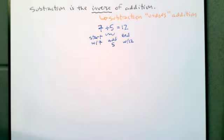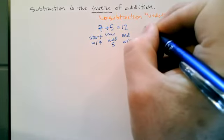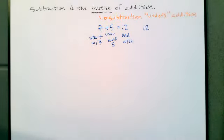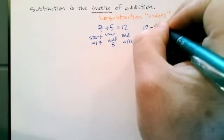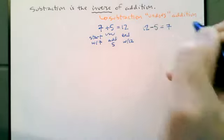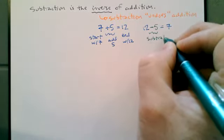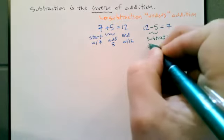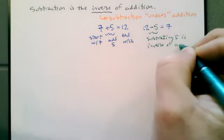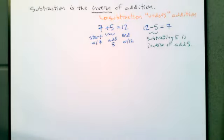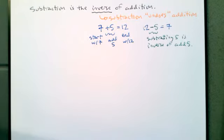If we want to get back to where we started, we do the inverse operation. The inverse of adding 5 is subtracting 5. So if we start at the end and do the inverse of adding 5 by subtracting 5, we'll be back where we started. Subtracting 5 is the inverse of adding 5, and so we end up back where we started. That's what an inverse does — it gets you back to where you started. If the operation is 'put shoes on,' the inverse operation is 'take shoes off.'